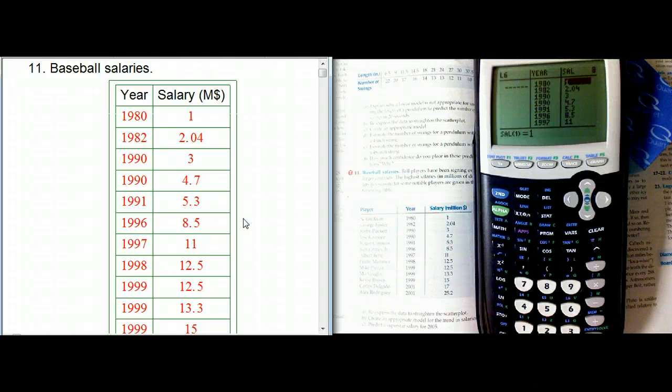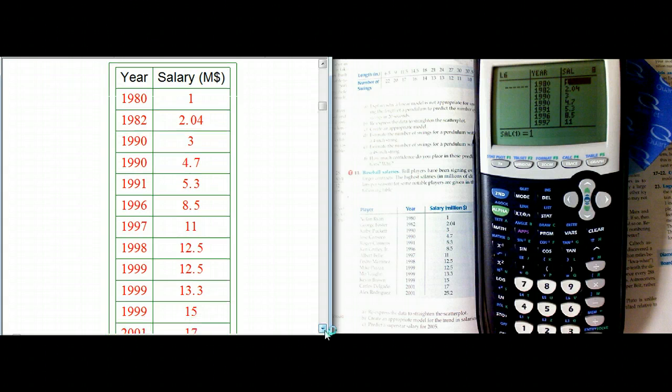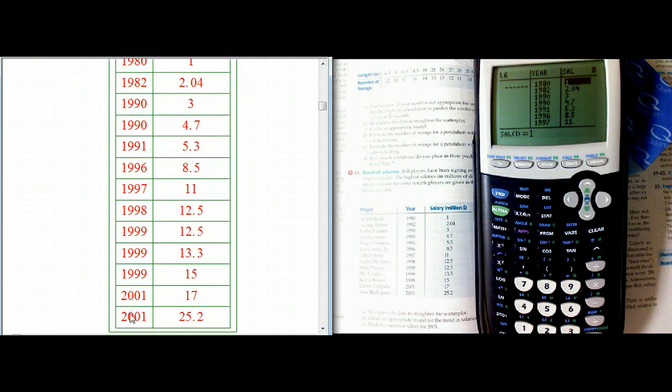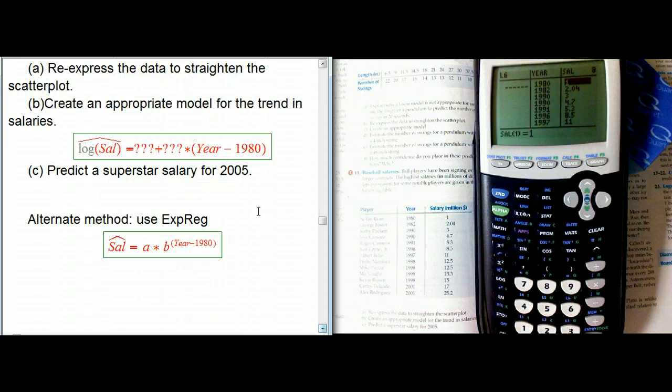Here's a problem about re-expressing a scatterplot. It's Chapter 10, Problem 11, in Bach, Feldman, DeVoe. It's about baseball salaries. They've tabulated the highest salaries, basically the superstar salaries, from 1980 to 2001, starting at $1 million and ending up at $25.2 million per year. Pretty amazing.